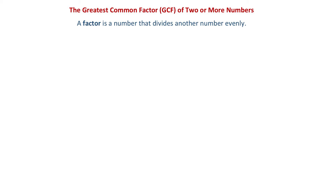A factor is a number that divides another number evenly. For example, if we have the number 12, then all the factors of 12 are 1, 2, 3, 4, 6, and 12.